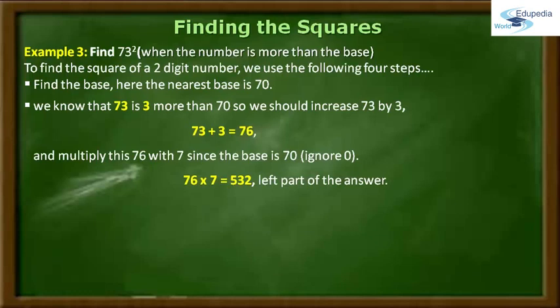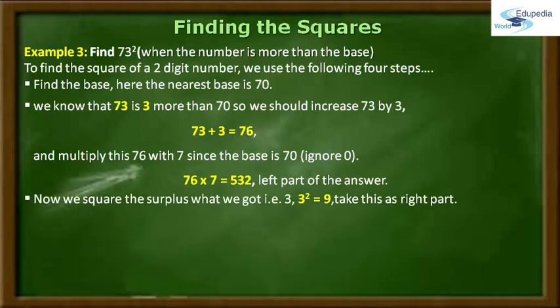By multiplying 76 with 7, we get the product as 532, and we have to take this 532 as the left part of the answer. Moving further to step number 3, I am going to take the surplus what I have got and square it. The surplus is 3, and by squaring the number 3, I get the answer as 9, and I am going to take this as the right part of the answer.